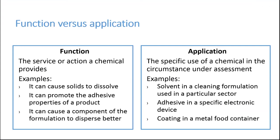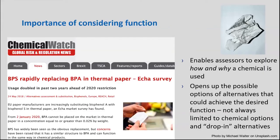It's important to focus on function when characterizing the chemical of concern. For the purposes of this training, we think about function as the service or action that a chemical broadly provides, while the application is the use of a chemical in the specific circumstance under assessment. So consider a solvent — it is a chemical that causes solids to dissolve, thereby allowing them to be used for a specific application like in a cleaning formulation. We stress a focus on function because it enables assessors to explore how and why a chemical is used, rather than simply trying to find a chemical to replace it with.